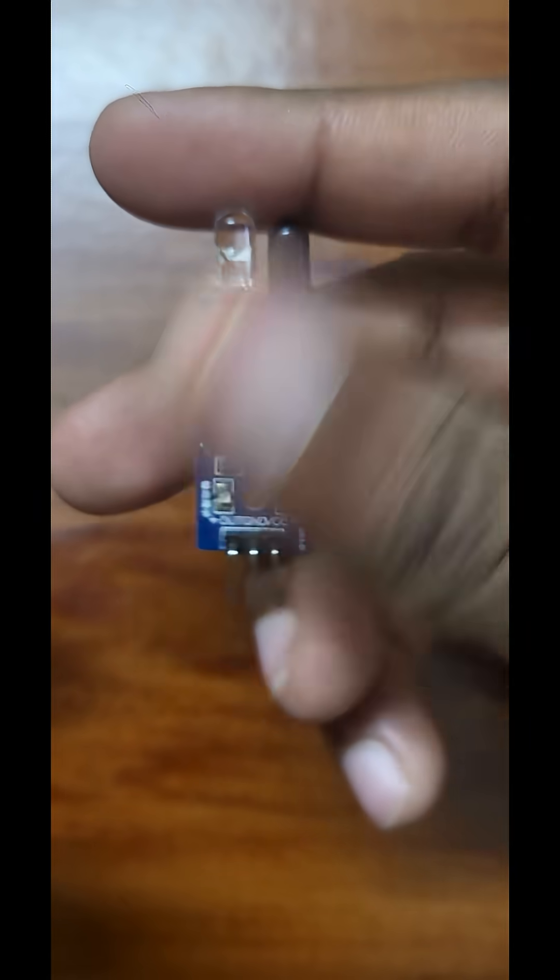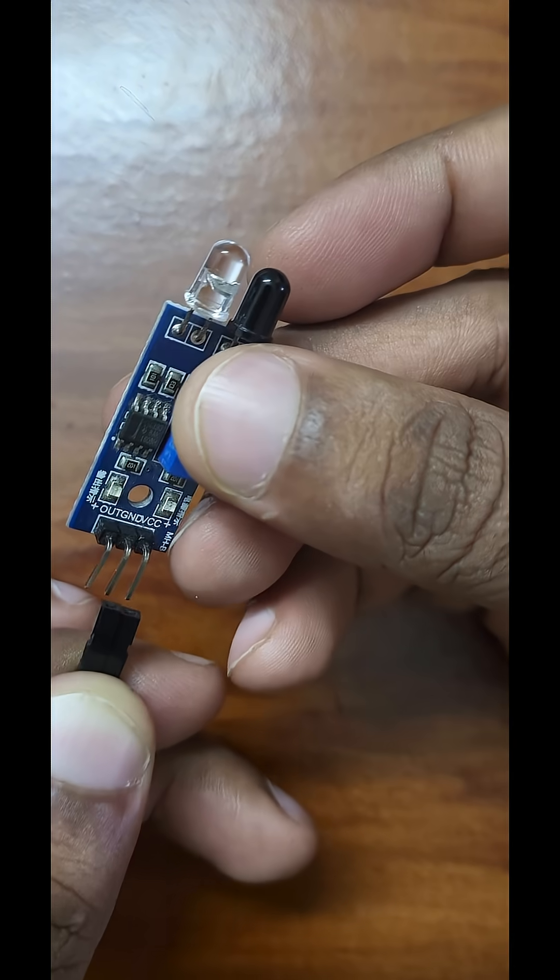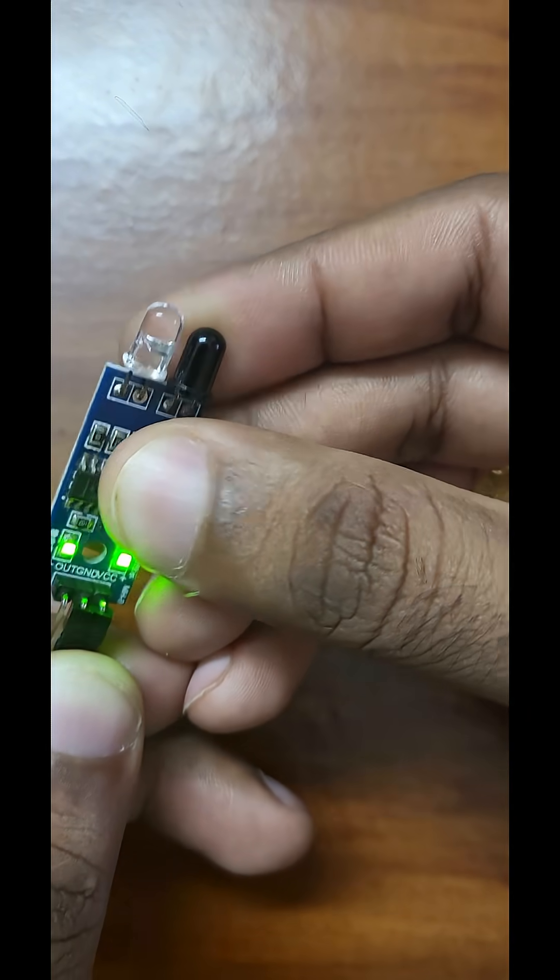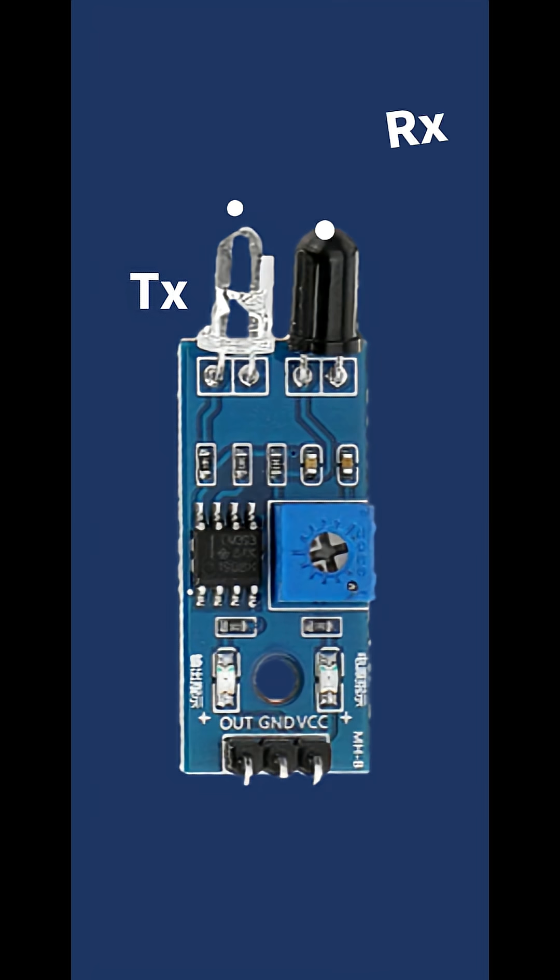IR sensors are widely used in obstacle detection, motion sensing, and line-following robots. Let's see what goes on inside.